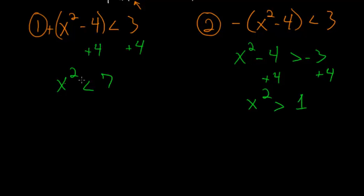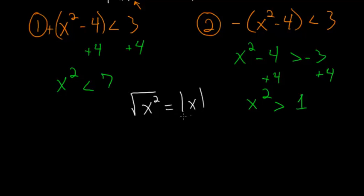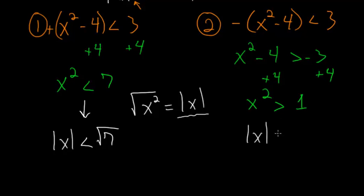Now usually when we have a square, we'd take the square root of each side and get plus or minus the square root of 7. But since this is an inequality, we can't do that here. We have to realize that the square root of x squared is really just equal to the absolute value of x, and when we write plus or minus the square root of something, we're incorporating that idea. So we rewrite Case 1 as the absolute value of x is less than the square root of 7, and Case 2 as the absolute value of x is greater than the square root of 1, which is just 1.